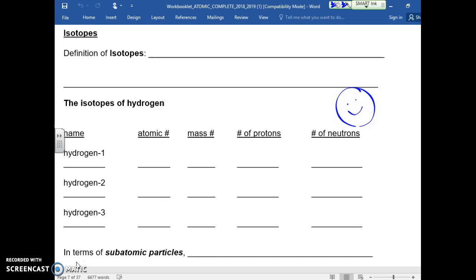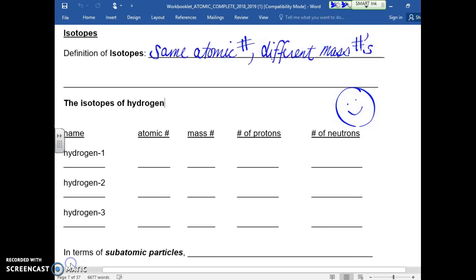First, a definition. I'll just write that out for you. One way that we can define isotopes is that we have atoms that have the same atomic number, but they have different mass numbers. Obviously, if you are the same atomic number, you must be the same element.